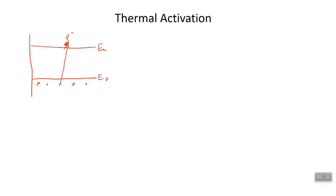Those of you studying statistical mechanics are going to get your fill of this Boltzmann factor. The probability of promotion — I'll just call it PR — the probability that this one electron is promoted up to the conduction band is proportional to e to the minus energy band gap over KT.